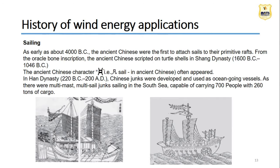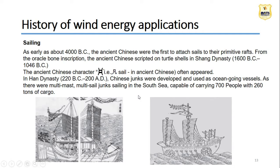The history of wind energy: in early 4000 BC, ancient Chinese were the first to attach sails to primitive rafts, using the force of wind to sail their boats carrying cargo of up to 60 tons or 700 people. So wind energy has been used since ancient times, not just in the recent 200 years. The ancient Chinese character for 'sail' reflects this early application of wind energy before 2000 AD.